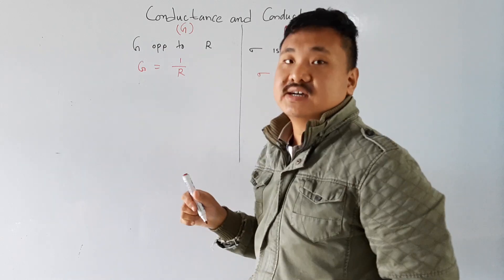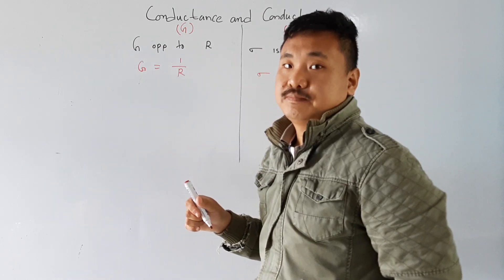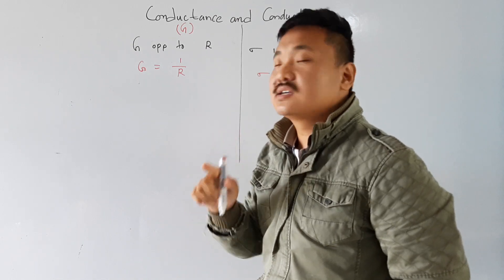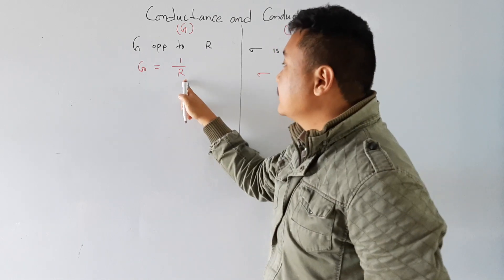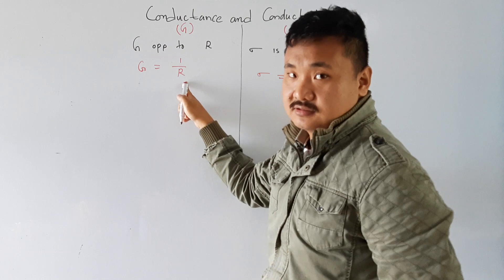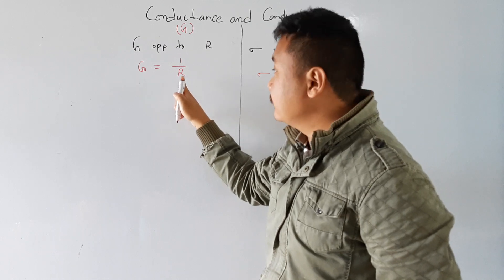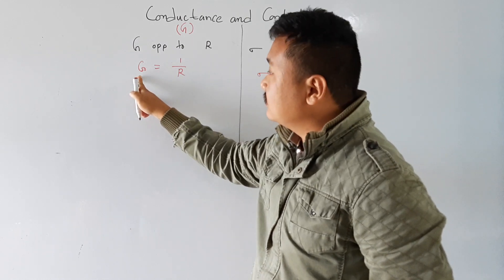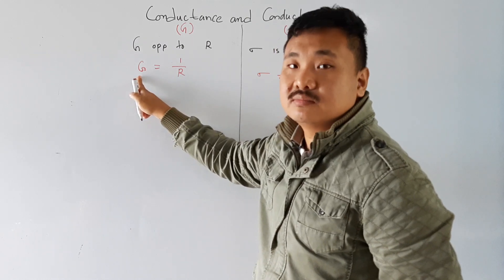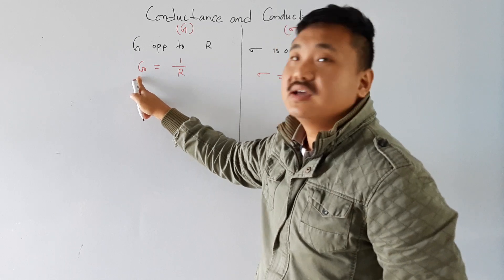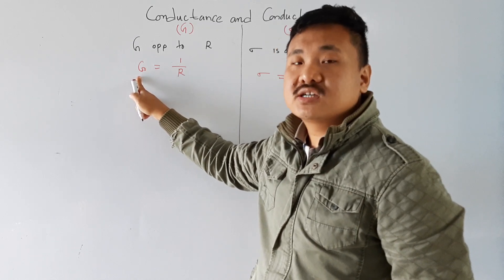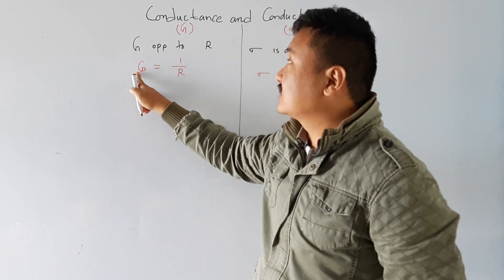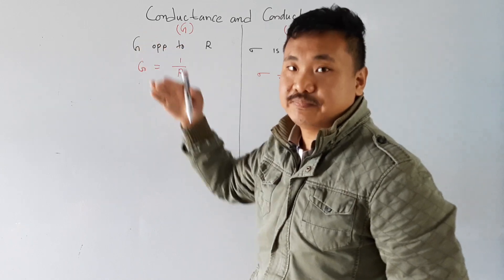For a good conductor, resistance should be very less. If the resistance is less, then conductance will become more. It means that for a good conductor, conductance should be very high.